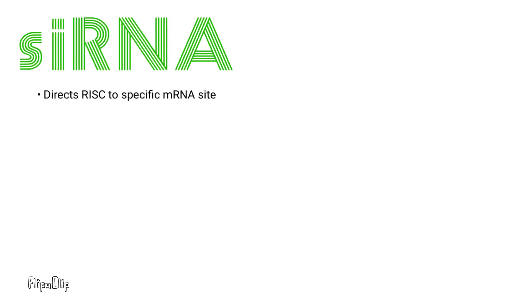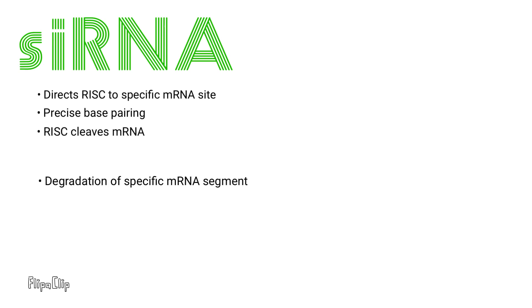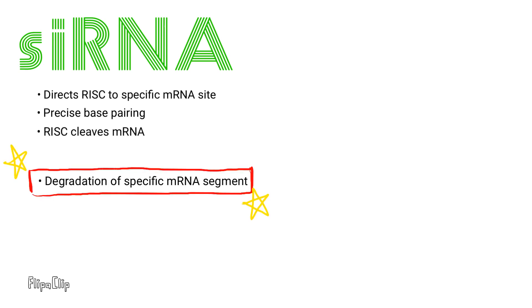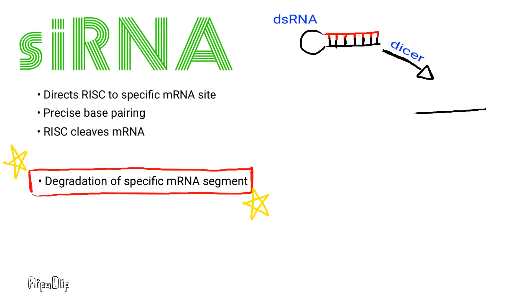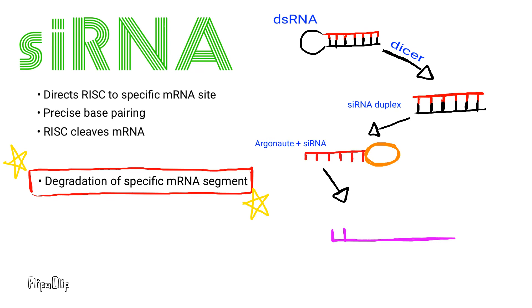Small interfering RNA works by using precise base pairing. Instead of functioning as a lock like microRNA, siRNA tells RISC to cleave the complementary strand, resulting in the degradation of the specific segment. Unlike microRNA, siRNA can only target and degrade its complementary strand.